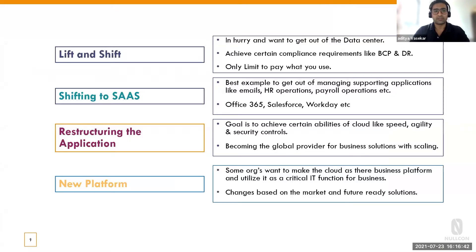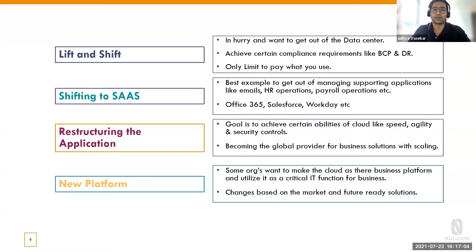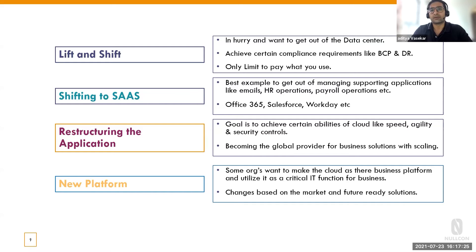Let's see some common cloud migration models. Lift and shift is the first one, where many organizations are in a hurry to get out of the data center or their on-premise infrastructure. In that case, lift and shift can be a possible model. There are certain compliance requirements where you need BCPDR and all those things. If you go for the proper subscription, you can actually comply with BCPDR — which is kind of a big thing. If you're managing your own data center, it's like multiplying your data centers across different locations, which is pretty hard to manage. In cloud adoption, it's pretty easy.